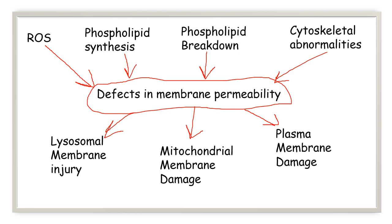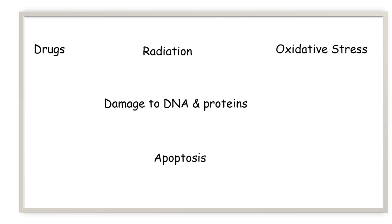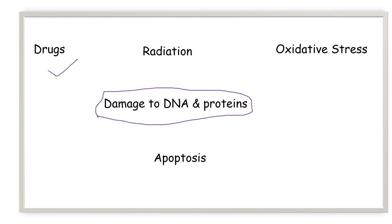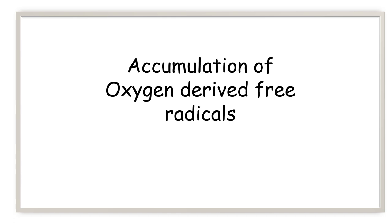The next mechanism is damage to DNA and proteins, usually caused by drugs, radiation, and oxidative stress. Normally the cells will repair DNA or protein damage. But if the damage is too severe, apoptosis is initiated and the cell dies. The only mechanism not described here is accumulation of oxygen-derived free radicals, which will be described in the next video.